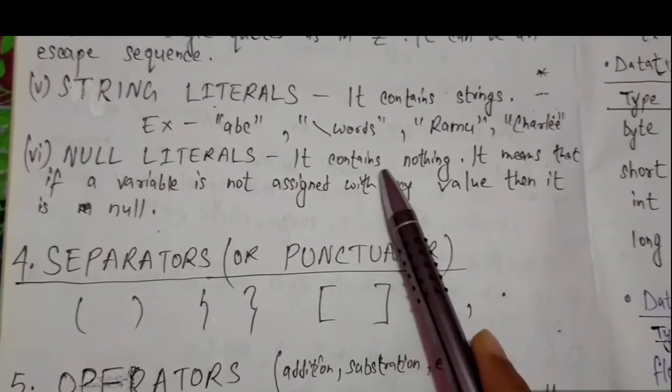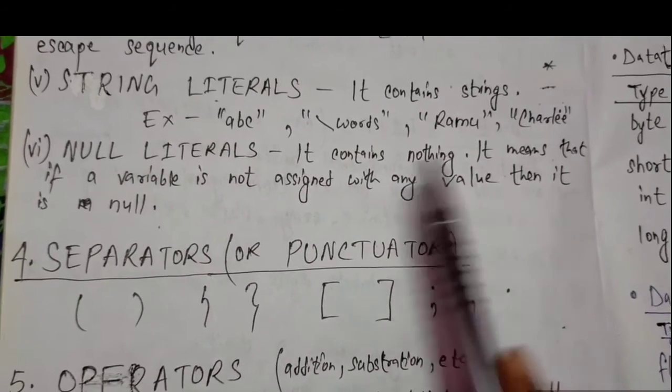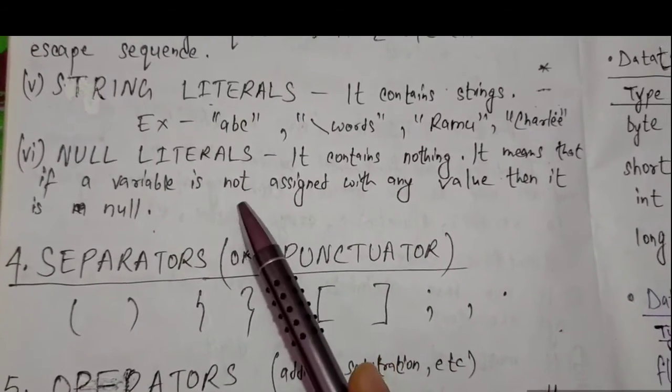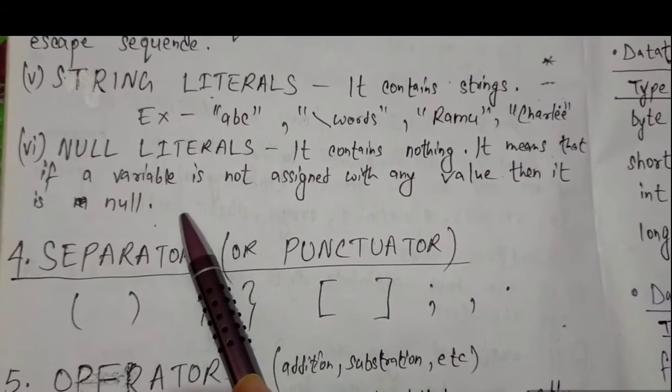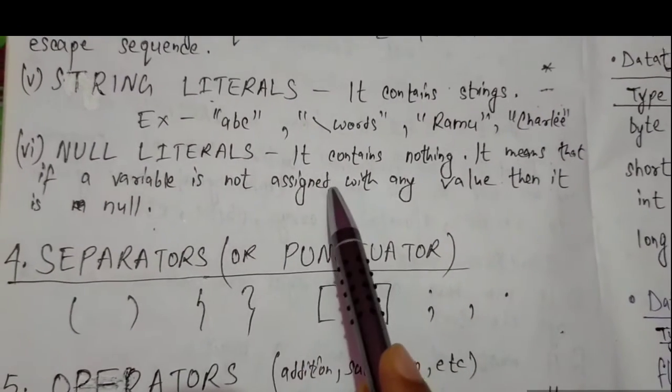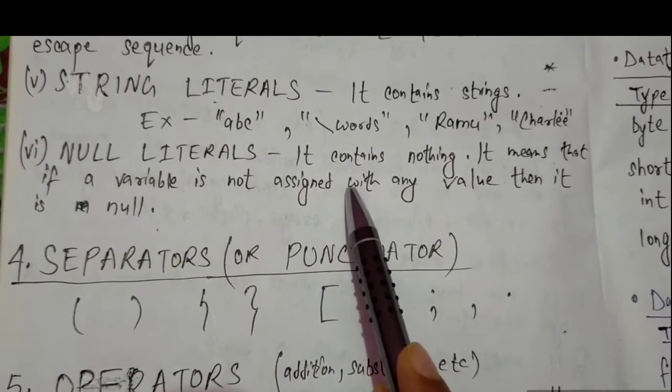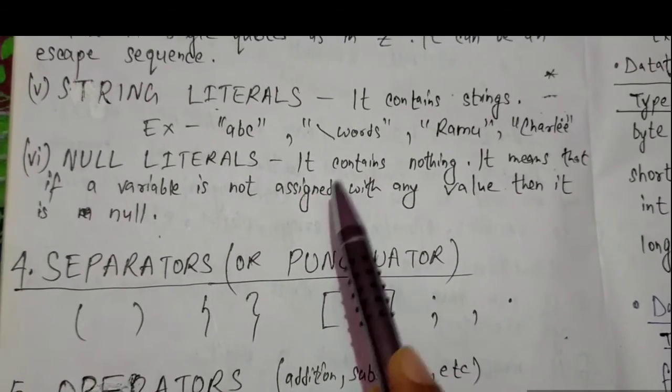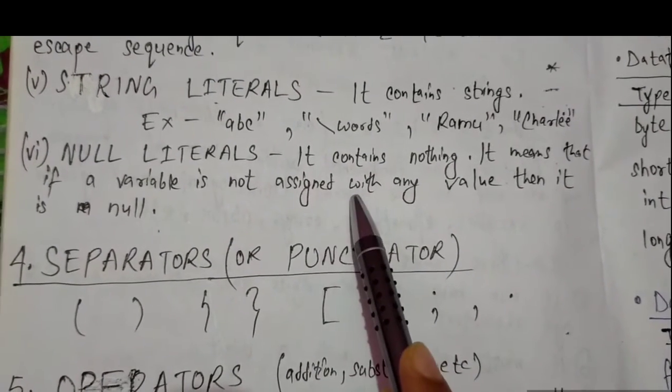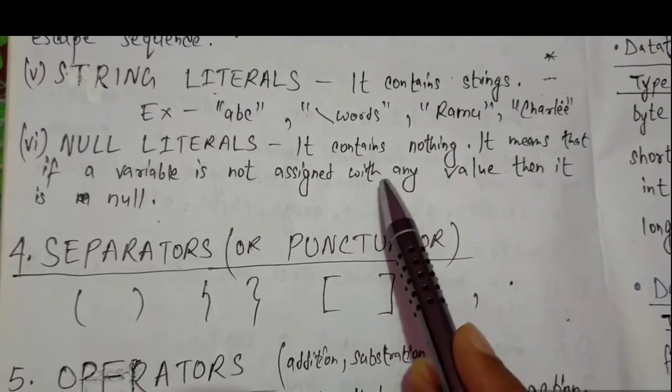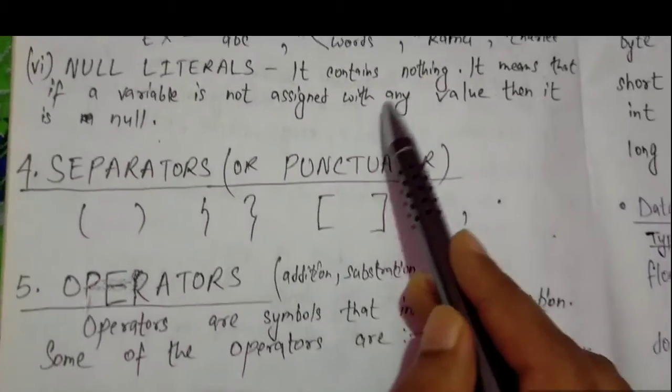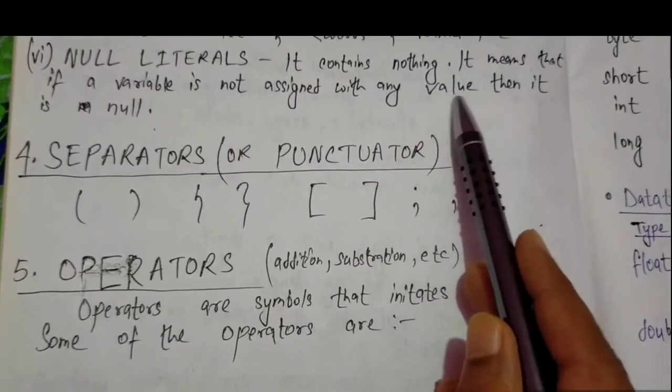Null literal - null means it is nothing. If a variable is not assigned with any value, then it is null. If any value in a program is not assigned and you try to print the value, it shows an error. That means the value is null and it cannot be shown.